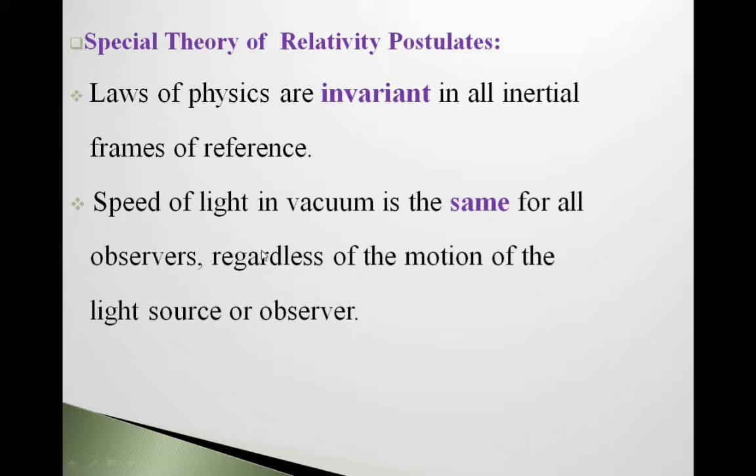Second postulate: speed of light in vacuum is the same for all observers, regardless of the motion of the light source or observer. The speed of light in vacuum is the same whether the source is in motion, the observer is in motion, or they are at rest.